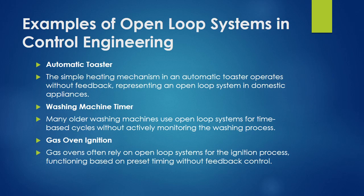Here are some examples of open-loop systems in control engineering. The first is an automatic toaster: the simple heating mechanism operates without feedback, representing an open-loop system in domestic appliances.